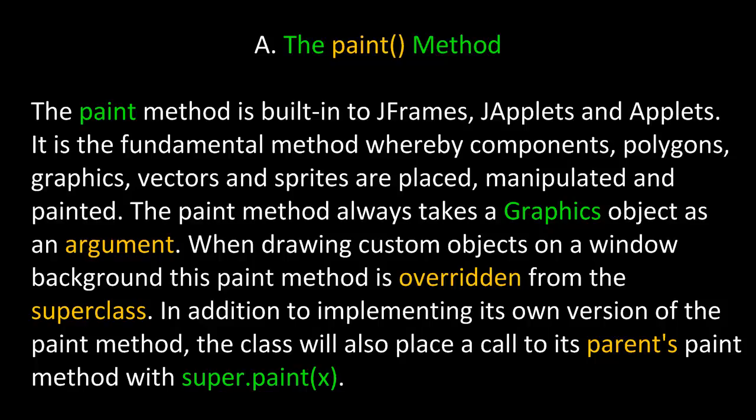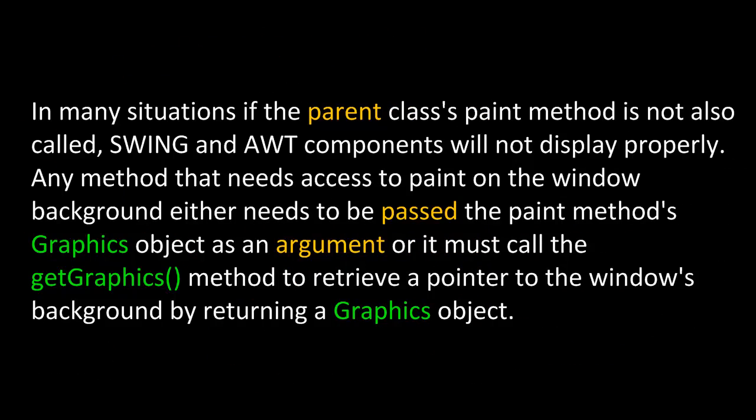The paint method always takes a graphics object as an argument. When drawing custom objects on a window background, this paint method is overridden from the super class. The class will also place a call to its parent paint method with super.paint and the instance of the graphics object. If the parent class's paint method is not also called, swing and AWT components will not display properly. Any method that needs access to paint on the window background either needs to be passed the paint method's graphics object as an argument, or it must call the getGraphics method to retrieve a pointer to the window's background by returning a graphics object.